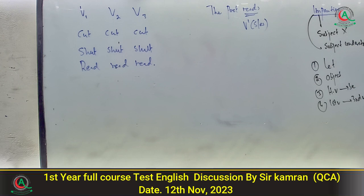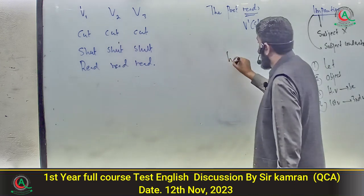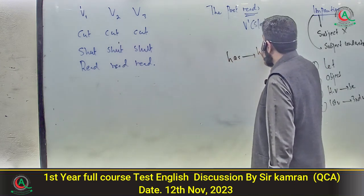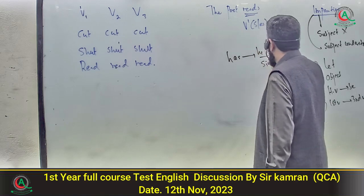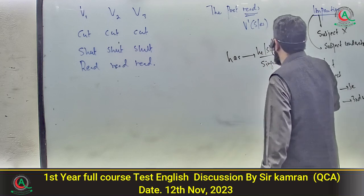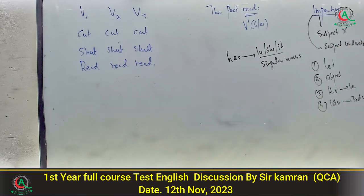Options a اور b بالکل غلط ہیں۔ Option c میں 'have' کیوں آیا؟ کیونکہ has is used with he, she, it اور singular noun — لیکن یہاں subject 'he' ہے، تو has چاہیے۔ Wait — sentence میں 'he' ہے، اس لئے ہم 'has' سے بناتے ہیں اور passive میں object کے ساتھ 'have' آیا کیونکہ 'many competitions' plural ہے۔ Option number C is the correct one۔